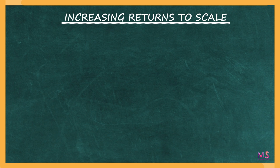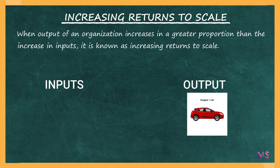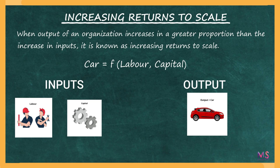When output of an organization increases in a greater proportion than the increase in inputs, it is known as Increasing Returns to Scale. For example, suppose the output to be produced is a car. The inputs employed are labor and capital, so the production function is: car is a function of labor and capital. Now if all inputs are increased by X proportion and production of car increases by twice that proportion — that is by 2X — then this is a case of Increasing Returns to Scale, because the proportion of output produced is more than the input employed.